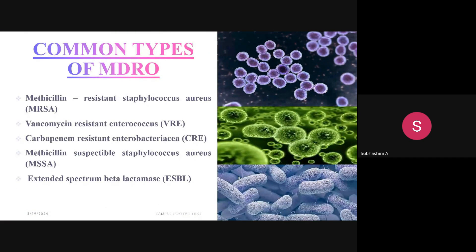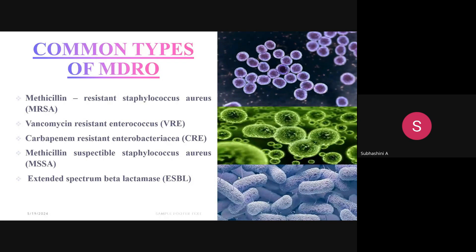The common types of MDRO are: methicillin-resistant Staphylococcus aureus (MRSA), vancomycin-resistant Enterococcus (VRE), carbapenem-resistant Enterobacteriaceae (CRE), methicillin-susceptible Staphylococcus aureus (MSSA), and extended-spectrum beta-lactamase (ESBL) producers.